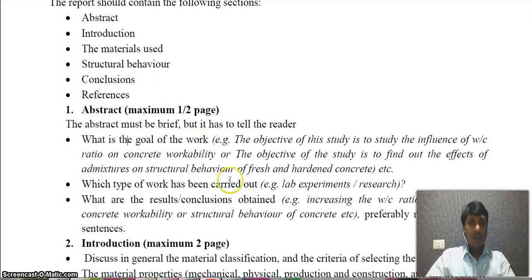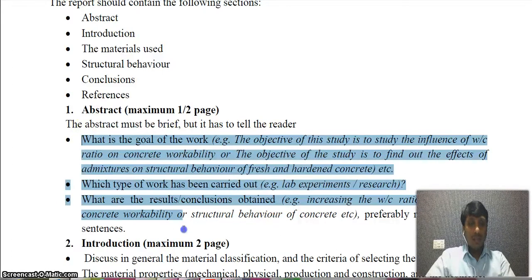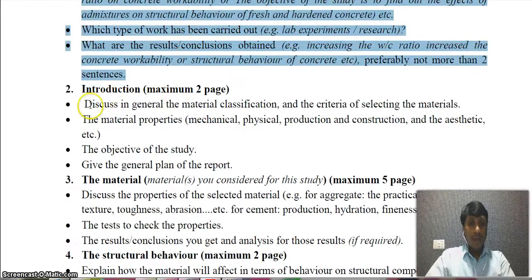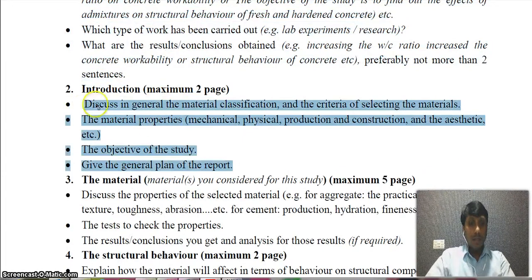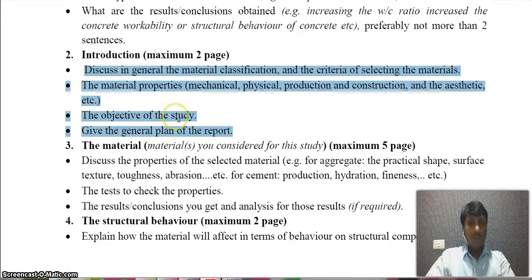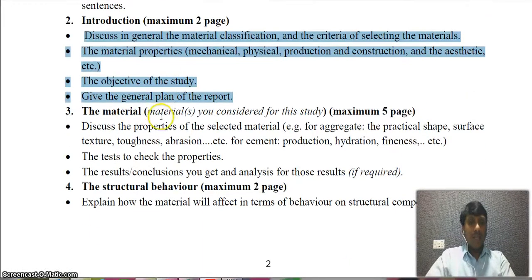The report sections are: abstract, introduction, materials, structural behavior, conclusions, and references. The abstract must be brief — covering the goal of the work, what type of work was carried out, and the results and conclusions obtained. In the introduction, discuss the material classification, criteria for selecting materials, material properties such as mechanical, physical, production, and chemistry, the objective of the study, and a general plan of the report.